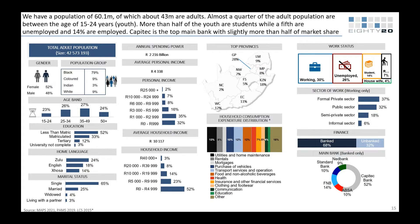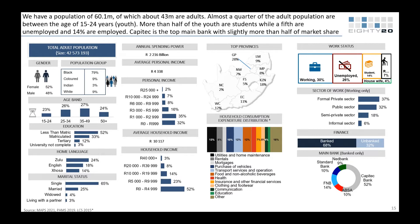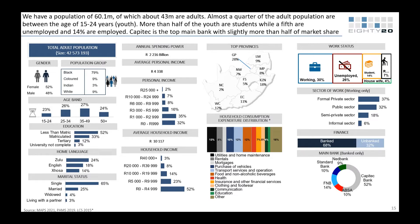Fewer than a third — less than 5 million people — pay personal income tax, and the top 2.2% of taxpayers, about 100,000 people, contribute 30% of all personal income tax. Conservatively, about 30,000 people a year are leaving this country — it would take only three years to wipe out 30% of our tax base. That's a very concerning thing for South Africa.